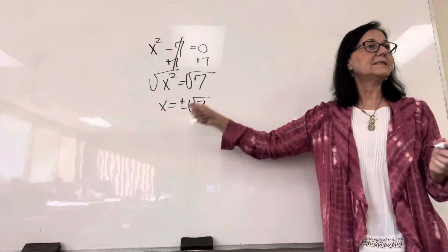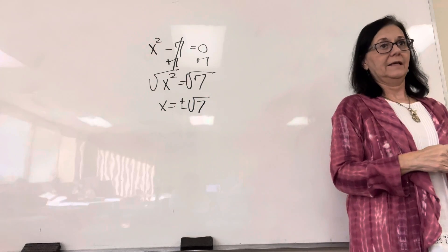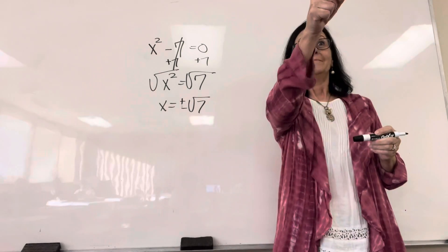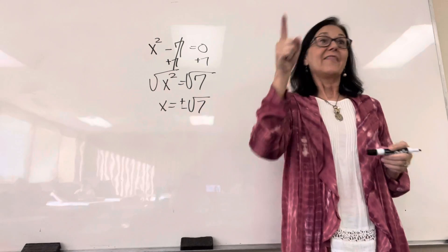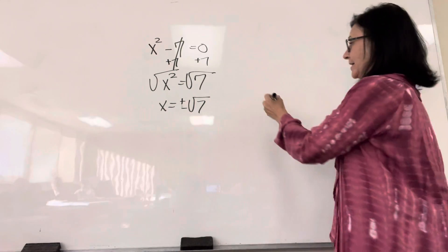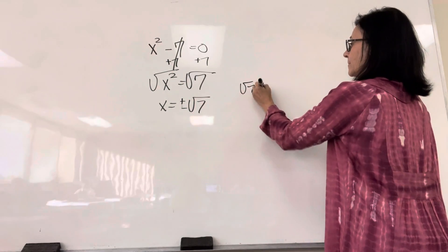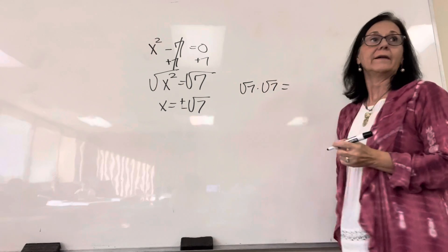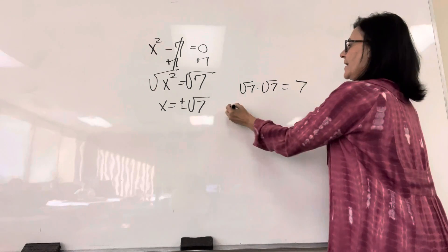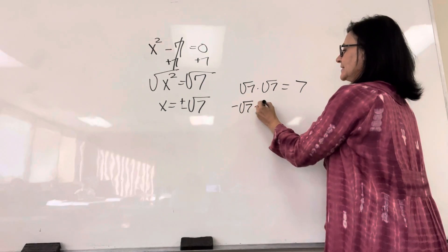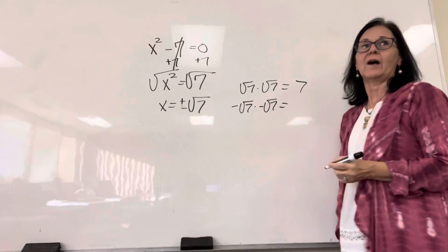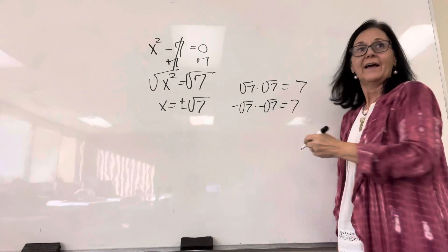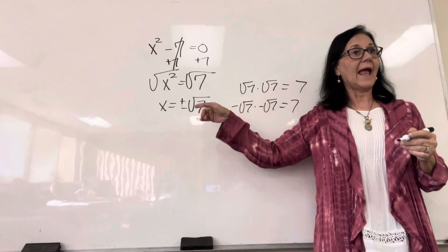Why is it both plus and minus? Yes? That is exactly correct. Because the square root of 7 times the square root of 7 is what? 7. Negative square root of 7 times negative square root of 7 is what? 7. That is why it is both plus and minus.